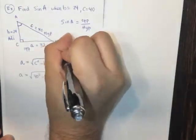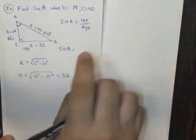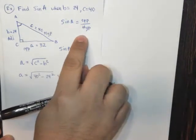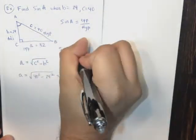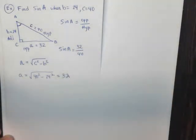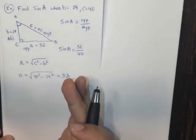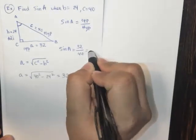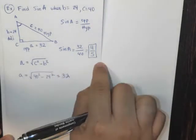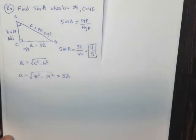So the sine of A being the opposite, which is 32, divided by the hypotenuse, which is 40. So the sine of the angle A is 32 over 40, and all you need to do then is reduce the fraction, and then you get 4 over 5, 4 fifths. So the sine of this angle A is simply 4 fifths.